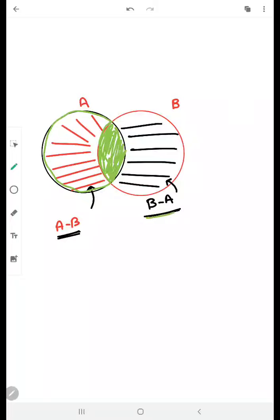Similarly, B-A, consider this full B and excluding the elements of common between A and B. So this is the region left. So this is B-A.